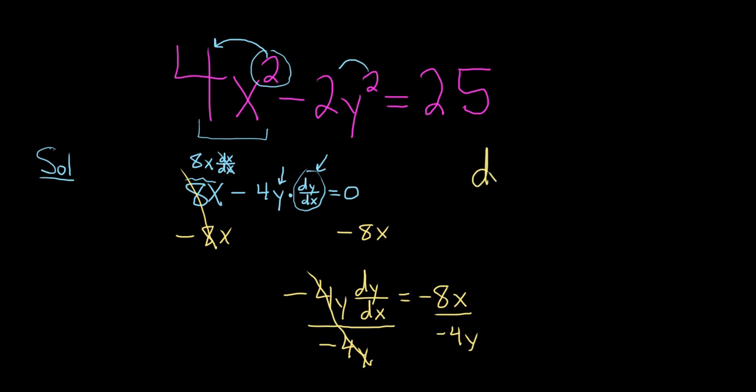So we're left with dy/dx equals, let's see, negative 8 over negative 4 is going to give us a positive 2. So I'll write the 2 upstairs. So 2x all divided by y. And that would be the derivative of y with respect to x, dy/dx.